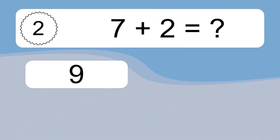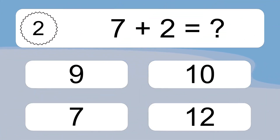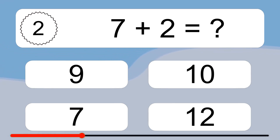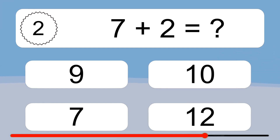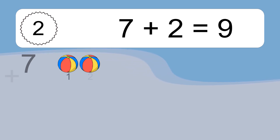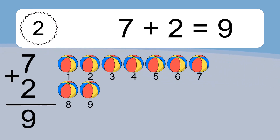7 plus 2 equals what? 7 plus 2 equals 9.